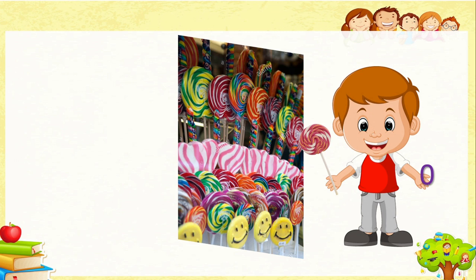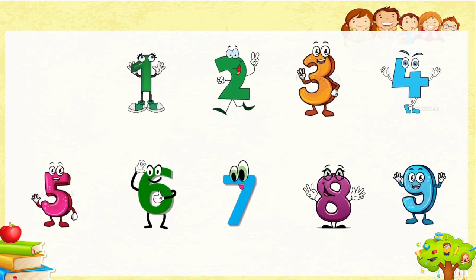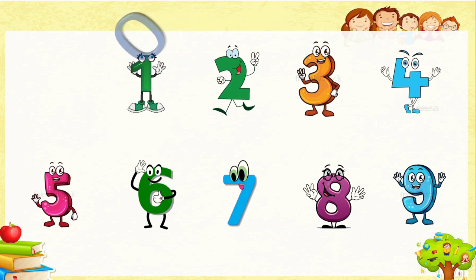I hope you understood about the meaning and value of zero. Here you can see these numbers — one, two, three, four, five, six, seven, eight and nine. Now tell me, where will be the place of zero? Zero is less than one. Zero means nothing. One means one object, one pencil. If you give one pencil to your friend, means you have zero pencil. So zero should come before one.